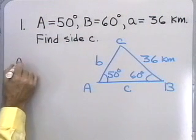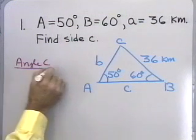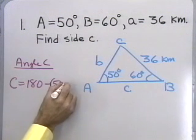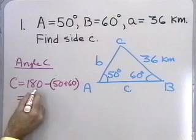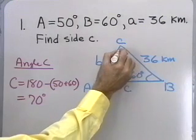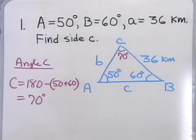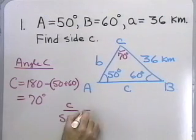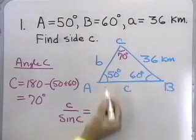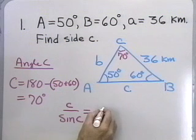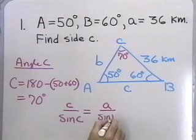The first thing I'm going to do is find angle C. Angle C will be 180 minus (50 plus 60), which is 180 minus 110, or 70 degrees. So angle C is 70 degrees. Now I'm ready to find side c using the Law of Sines: c is to sine of C as a is to sine of A.